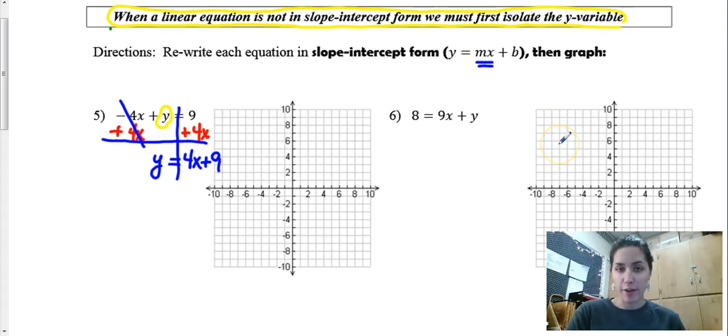If you wrote 9 plus 4x that's 100% correct. Unless the directions say slope intercept form. You would need to do one more step and rearrange. Y is by itself. So I am done.